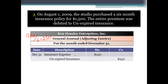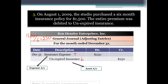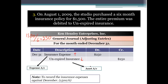For the month of December 31st, we will record the insurance expense of $250. To record the insurance expense against December, the calculation is $1,500 divided by 6, which equals $250. So the insurance expense for one month is $250.